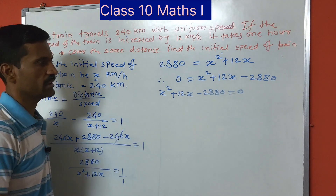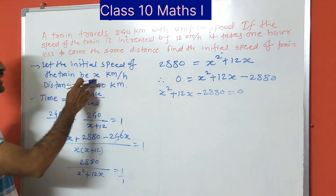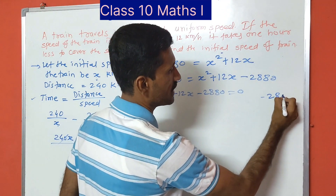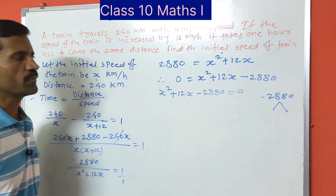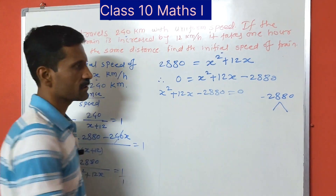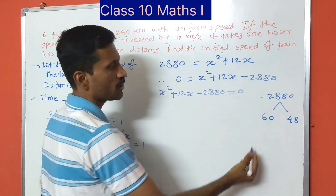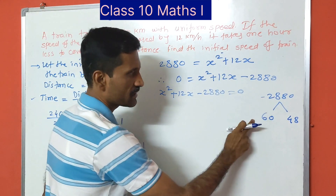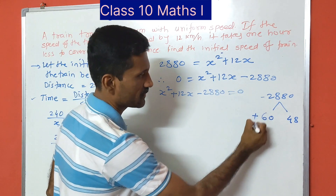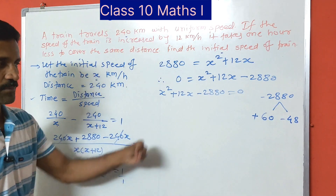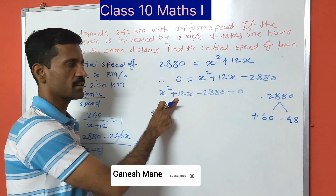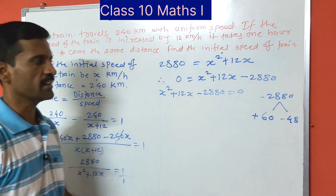So we have the quadratic equation x squared plus 12x minus 2880 equals 0. Now we need to find factors of minus 2880 such that their product is minus 2880 and their sum is 12. The factors are 60 and 48. Since the product must be negative, one factor is positive and one is negative: plus 60 and minus 48. We verify: 60 minus 48 equals 12, and 60 times minus 48 equals minus 2880. These are the correct factors.